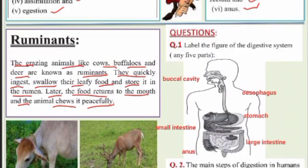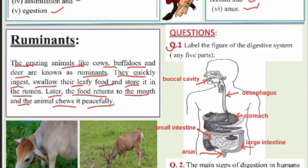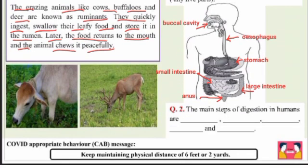Question number one: label the figure of the digestive system — any five parts. So the first part is the buccal cavity, this is the stomach, this is the small intestine, this one is the large intestine, and this one is the anus.